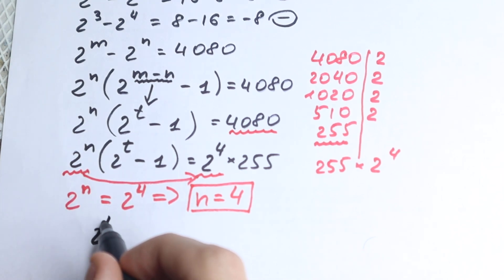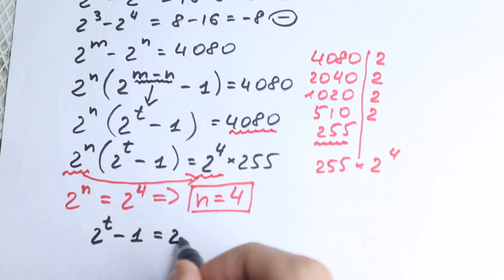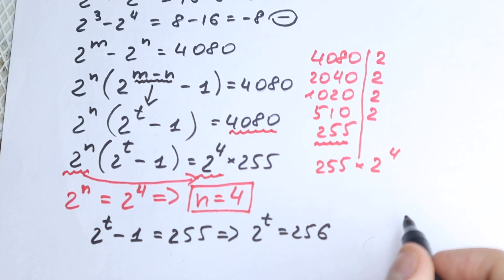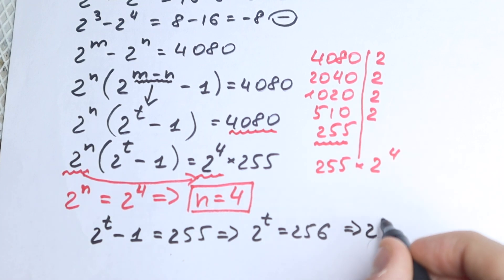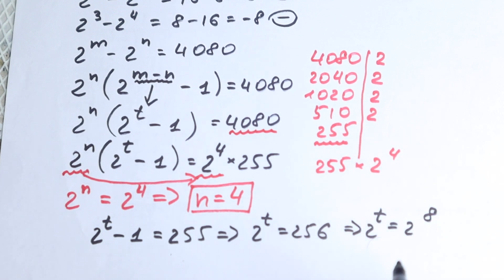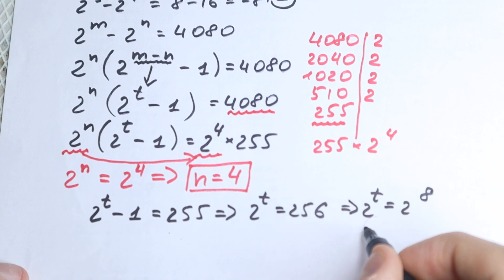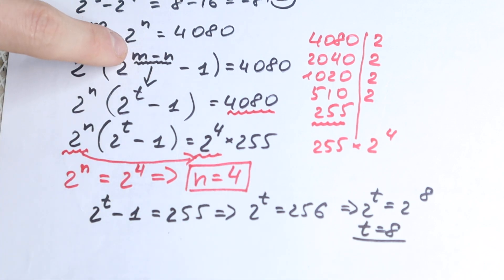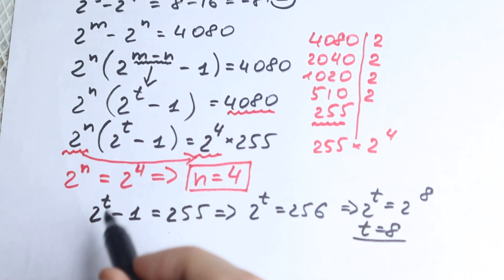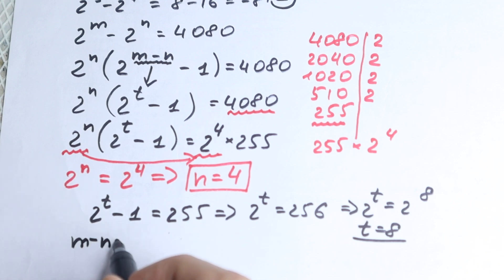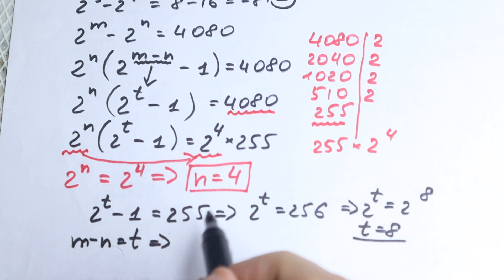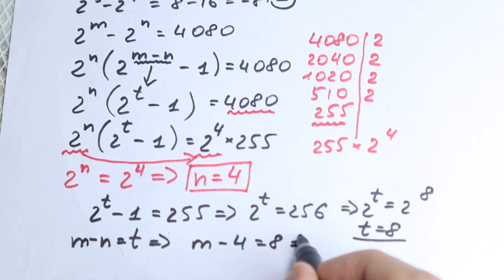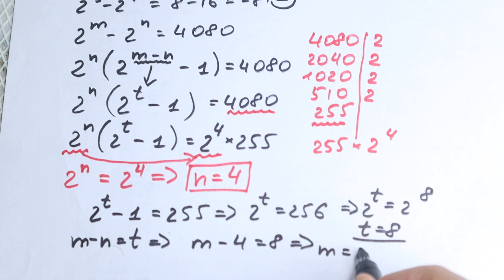From 2 to the power t minus 1 equals 255, we get 2 to the power t equals 256. This is a common case — 256 is 2 to the eighth power, so t equals 8. But we need m and n, not t. Recalling our substitution m minus n equals t, we have m minus 4 equals 8, and therefore m equals 12.